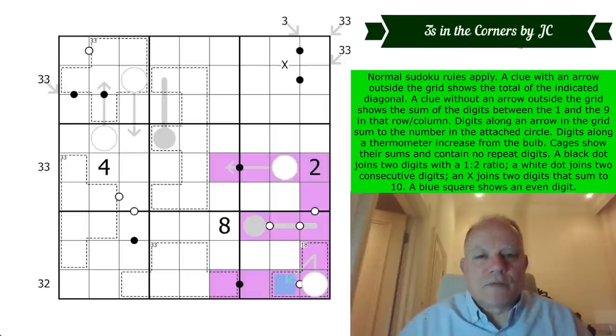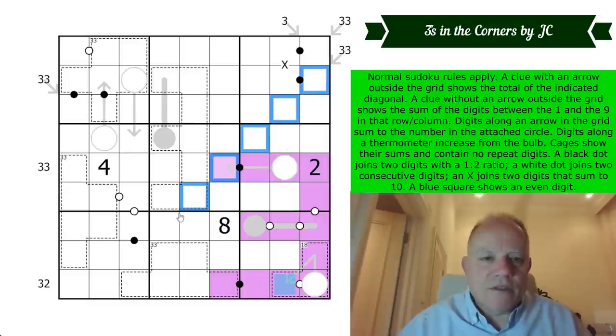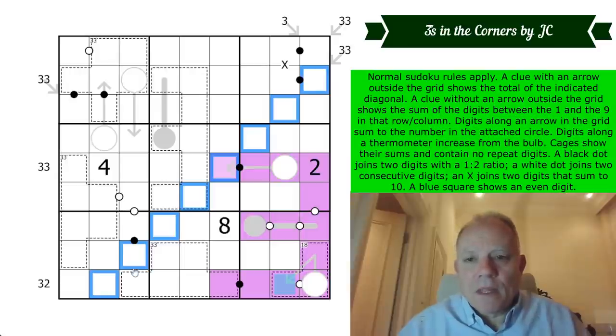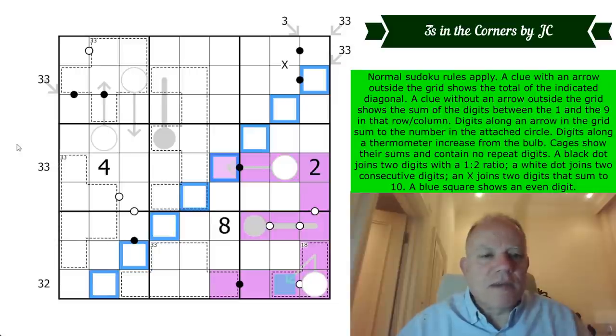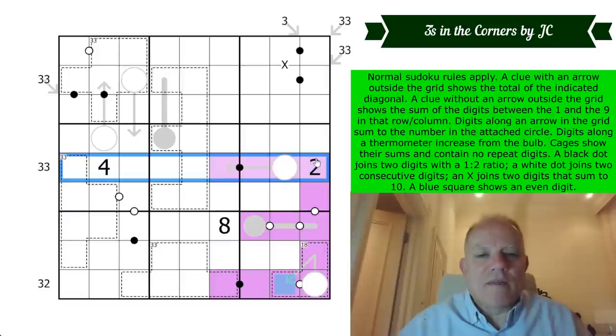So normal Sudoku rules apply. That's one to nine in every row, column and box. A clue with an arrow outside the grid shows the total of the indicated diagonal. So those cells add up to 33. They can contain repeats. A clue without an arrow outside the grid shows the sum of the digits sandwiched between the one and the nine in that row or column. So in this row,